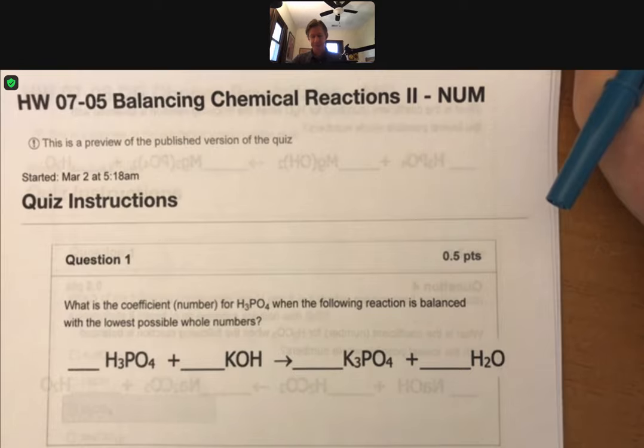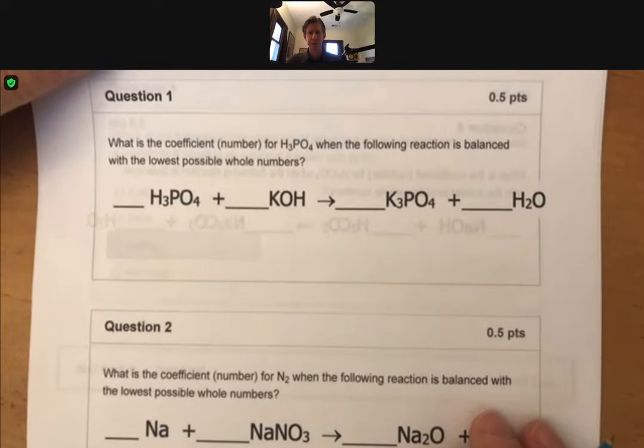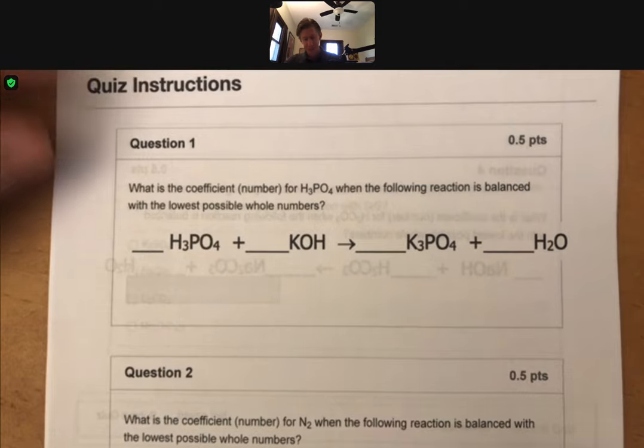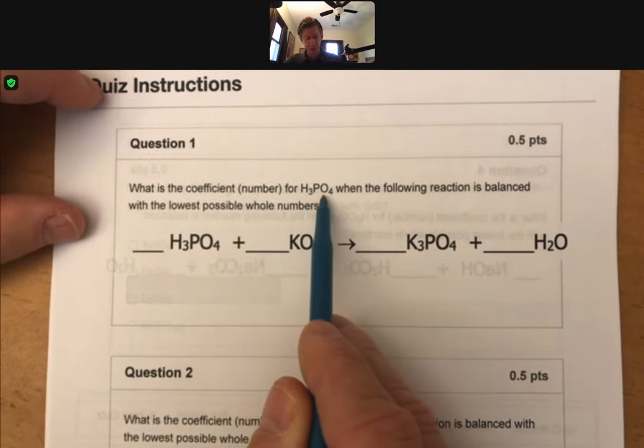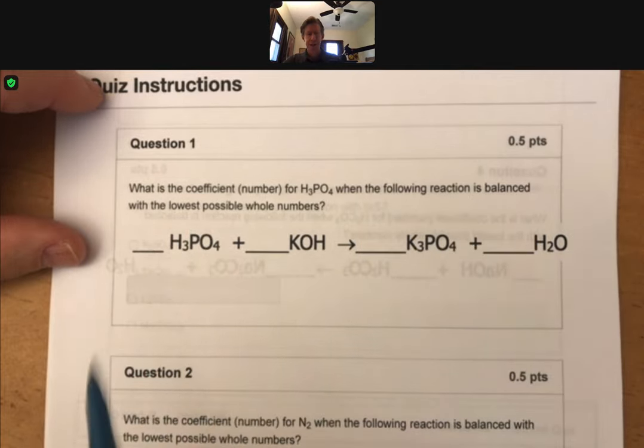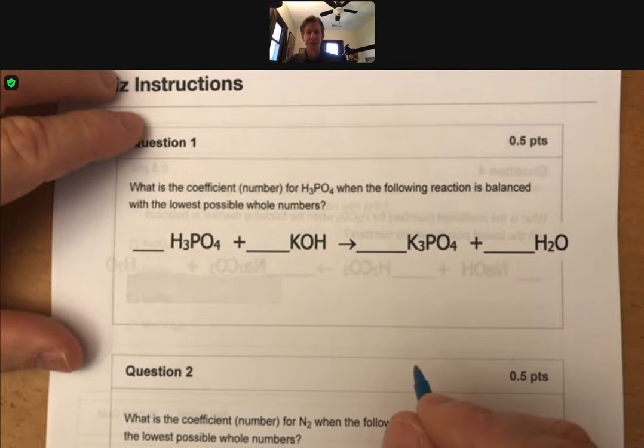Let's balance these reactions, and you're going to have a number of them to do, but we'll start with this first one and see how far we get. So this first one asks, what is the coefficient for H3PO4 when the following reaction is balanced with the lowest possible whole numbers? And I've got my lines in front of them, which is where I like to put my coefficients.